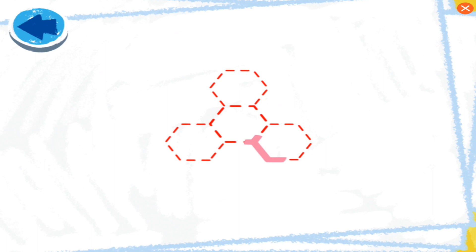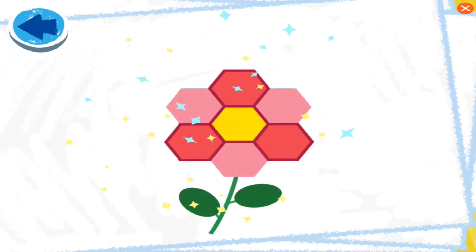This picture has hexagons! Boy, Elmo wonders what it is! Nice hexagon trace! Oh-ho-ho! Elmo sees! It's a flower!